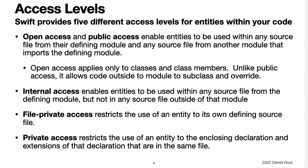Access Levels. Swift provides five different access levels for entities within your code. These access levels are relative to the source file in which an entity is defined, and also relative to the module that source file belongs to. Open access and public access enable entities to be used within any source file from their defining module, and also in a source file from another module that imports the defining module. You typically use open or public access when specifying the public interface to a framework. The difference between open and public access is described below.